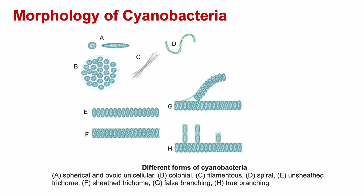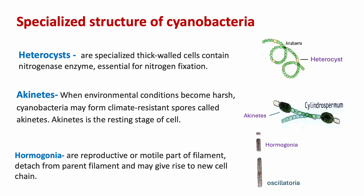Morphology of cyanobacterial cells: cells can be spherical or ovoid and unicellular. They can also be colonial, filamentous, spiral, or sheet-like. Trichomes can be seen. False branching and true branching are also present.